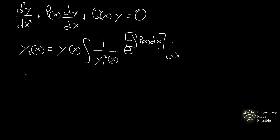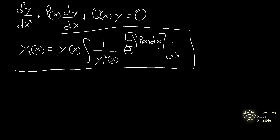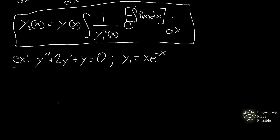This is the equation you'll use to solve for a second solution of the differential equation that will give you the general solution. This is the reduction of order method for a second-order linear differential equation in this form. Instead of doing the full process shown earlier, you can plug and play into this equation and skip many steps. Let's go over an example using this equation.